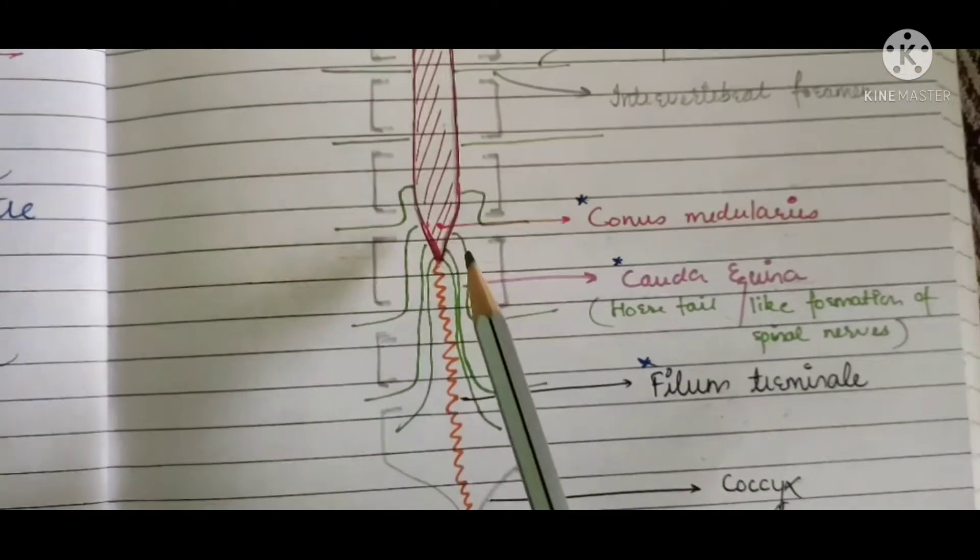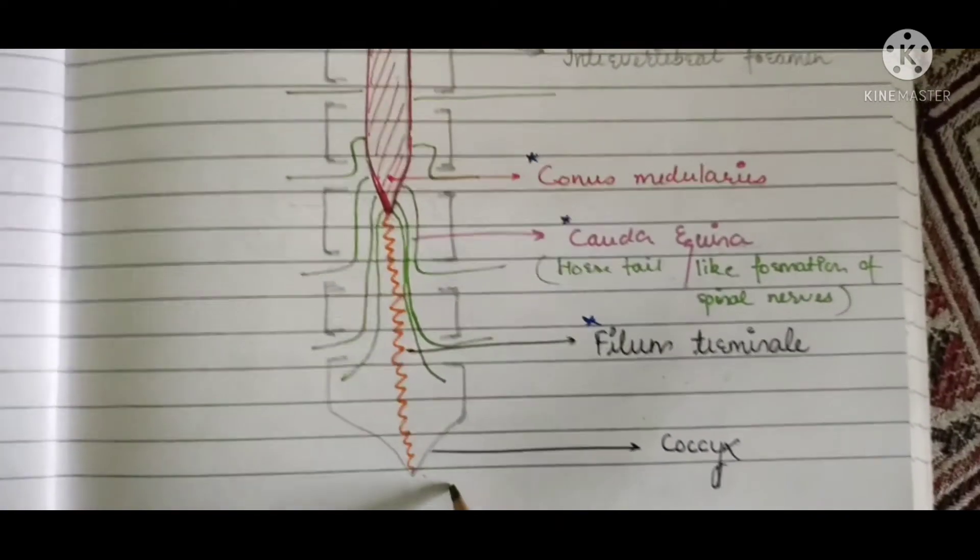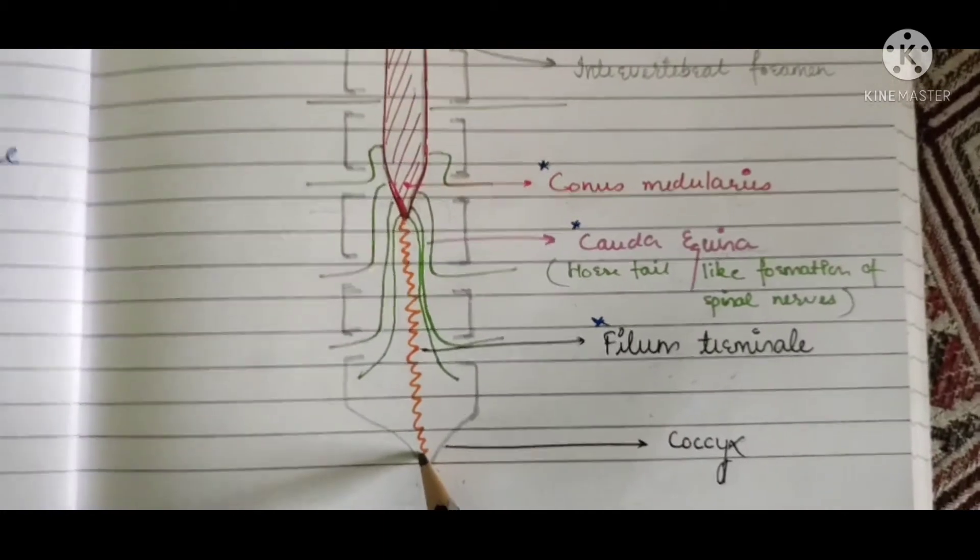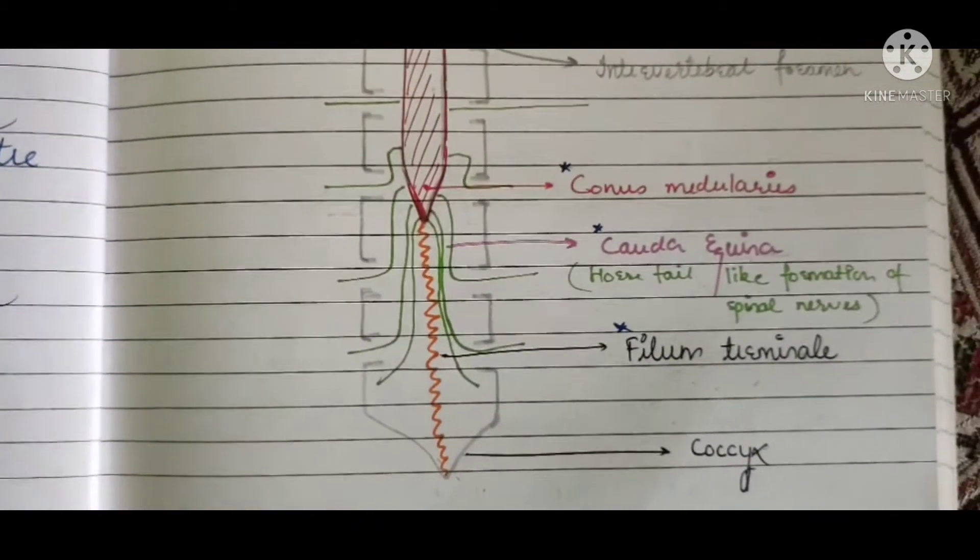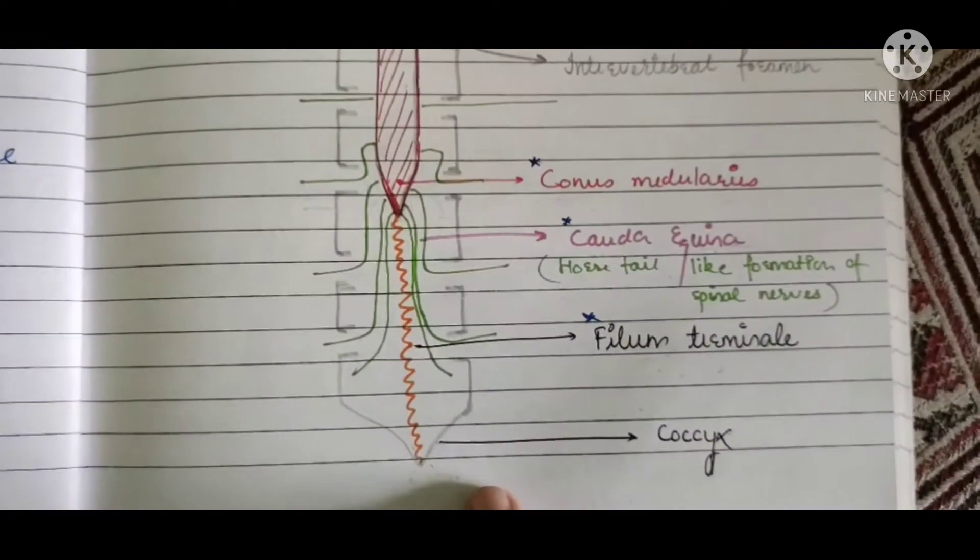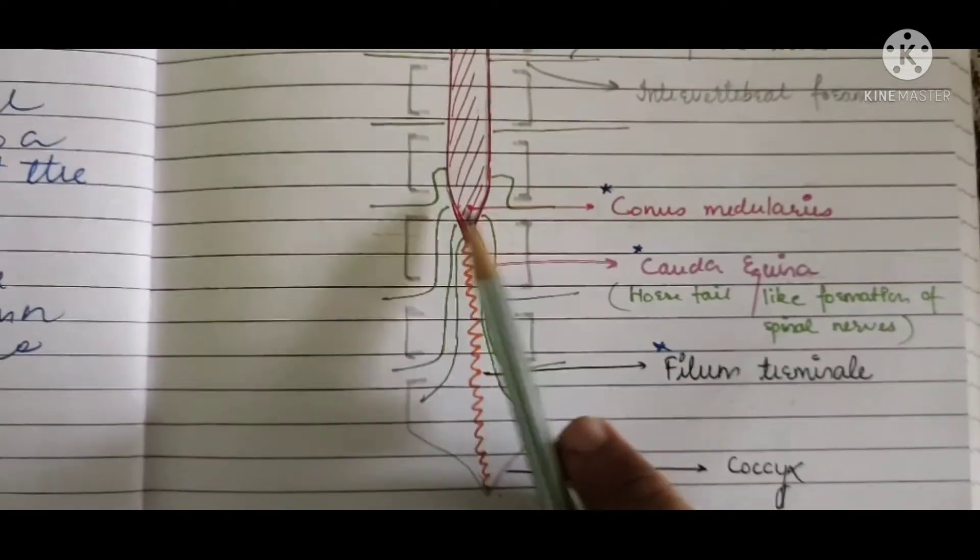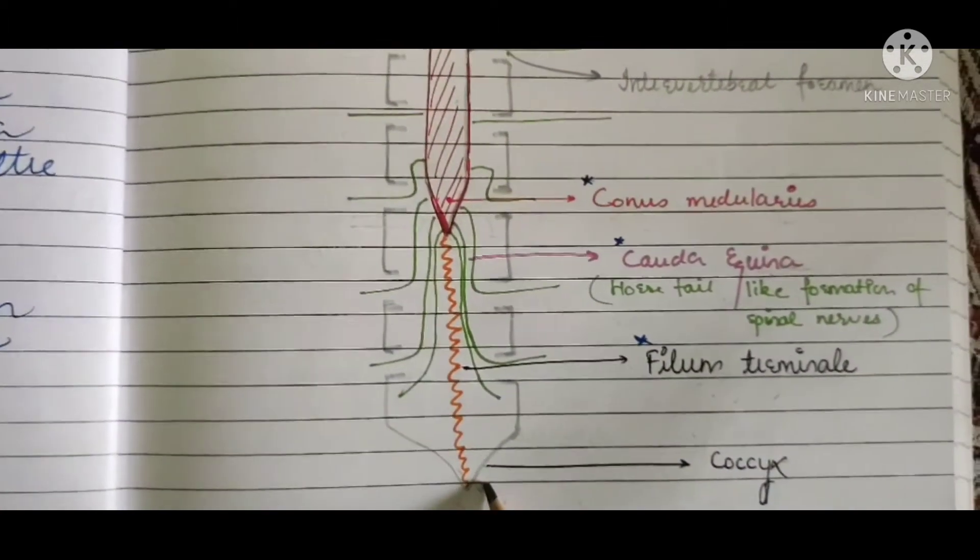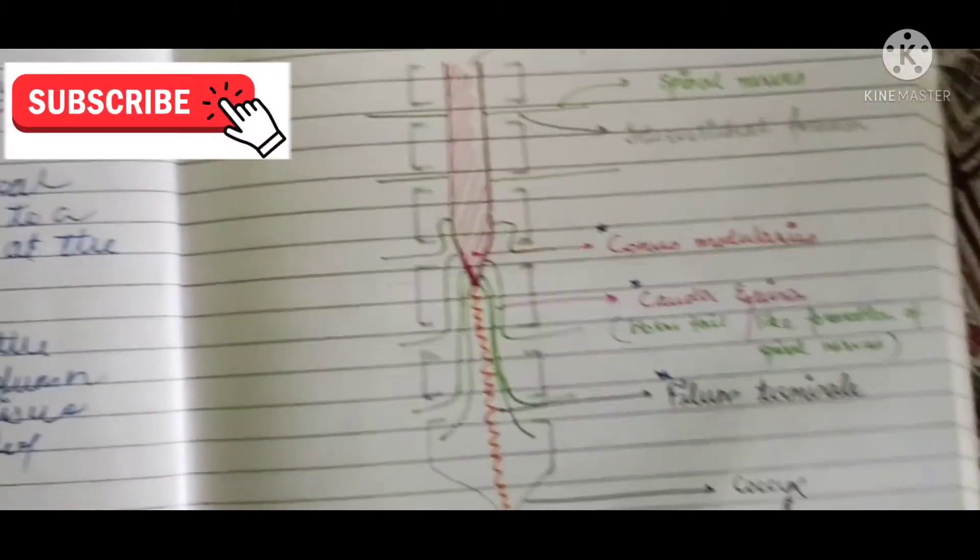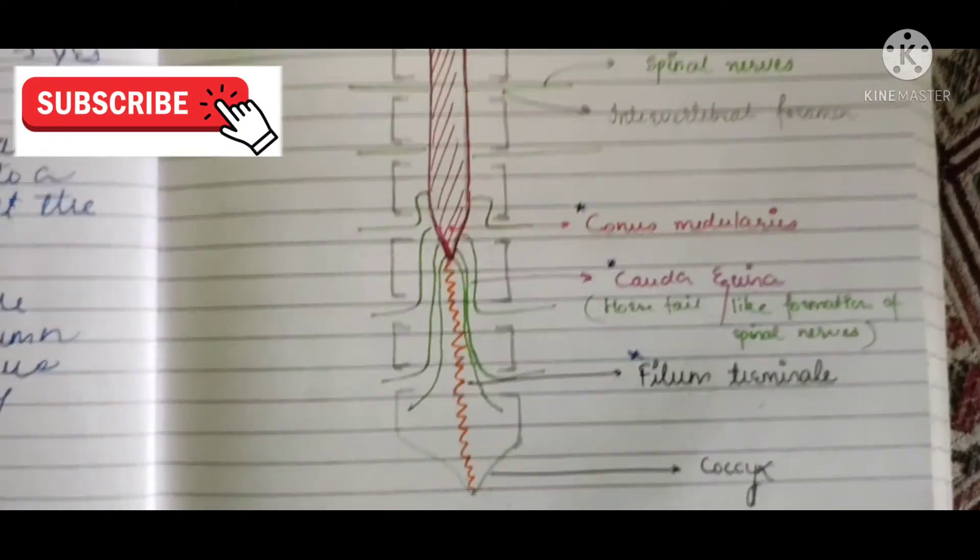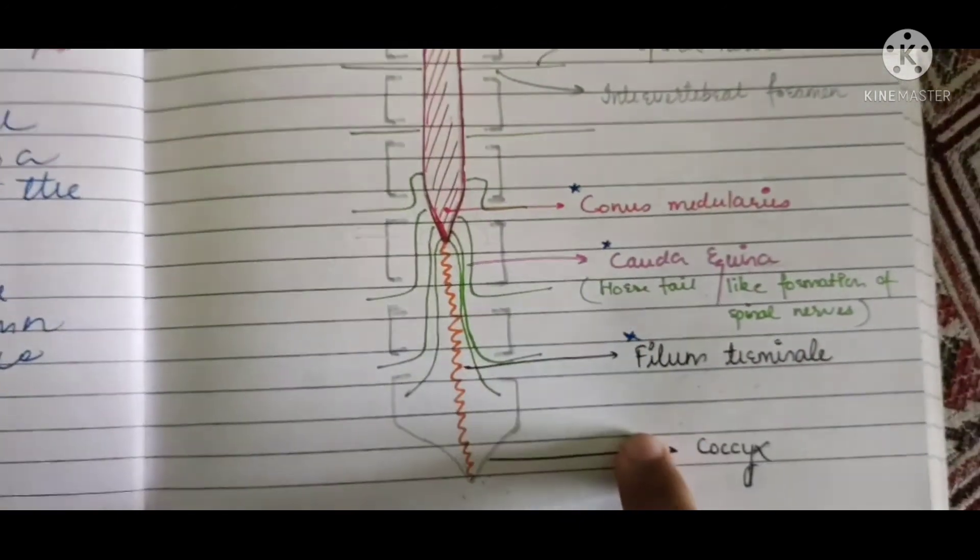It is joining the conus medullaris with the coccyx because it is a connective tissue. So what does the connective tissue do? It connects two things. So this is also doing the same. It is connecting the conus medullaris with the coccyx. So I hope you are clear with these three terminologies and now we will not be confused between these three terminologies.